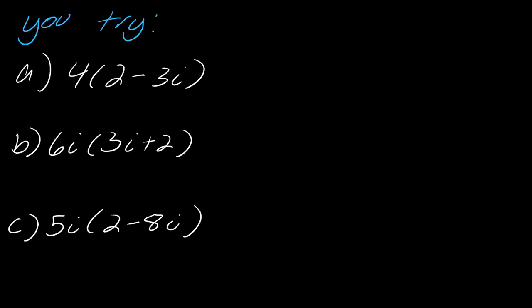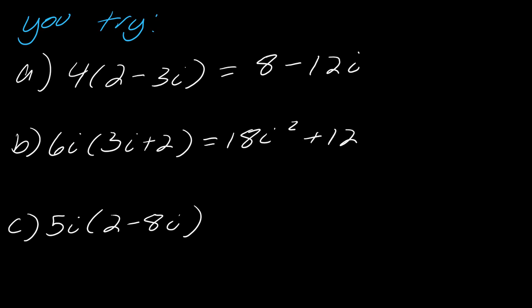With that in mind, pause the video and give these a try. For this first one, there's no i in front, so we don't have to worry about that trick — this would just be 8 minus 12i. Then for b, distributing gives me 18i squared plus 12i, so I rewrite this as negative 18 plus 12i. You can almost think of i squared as just flipping whatever sign you've got.